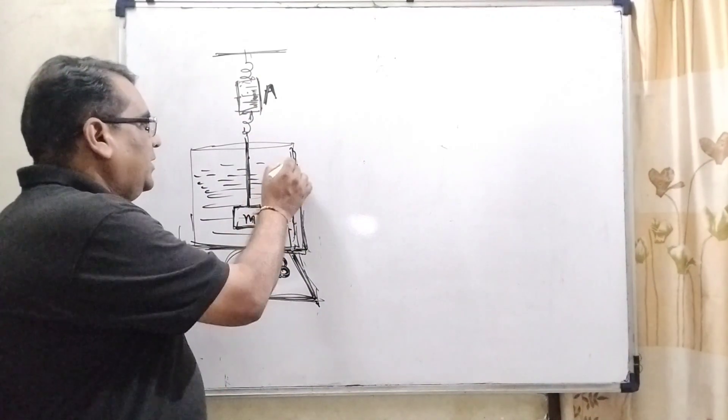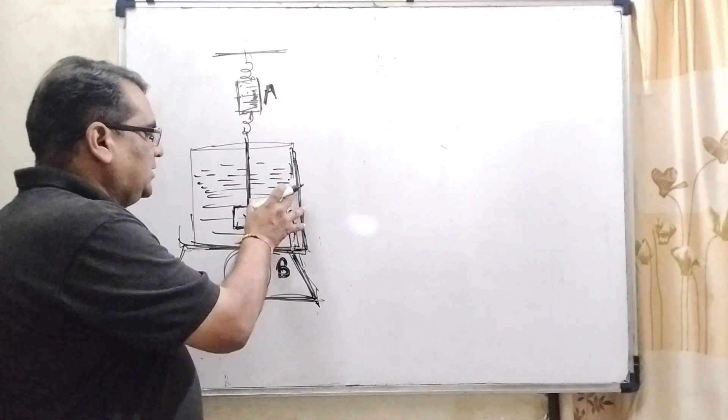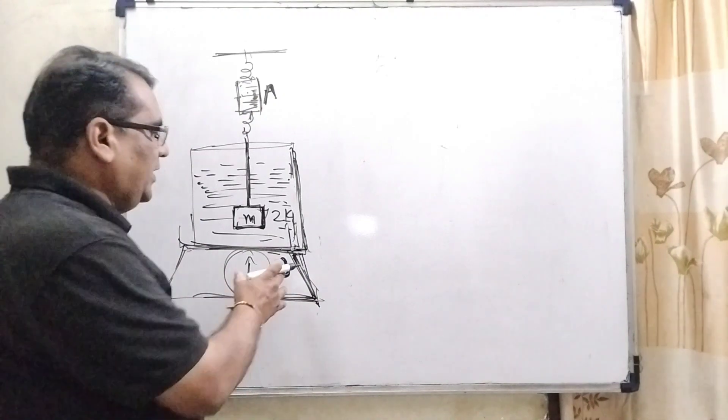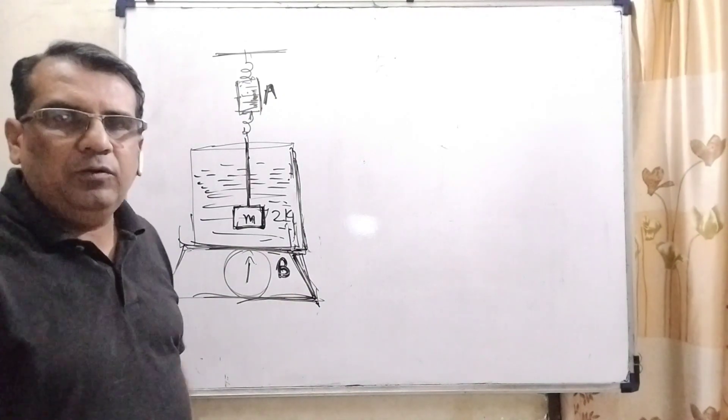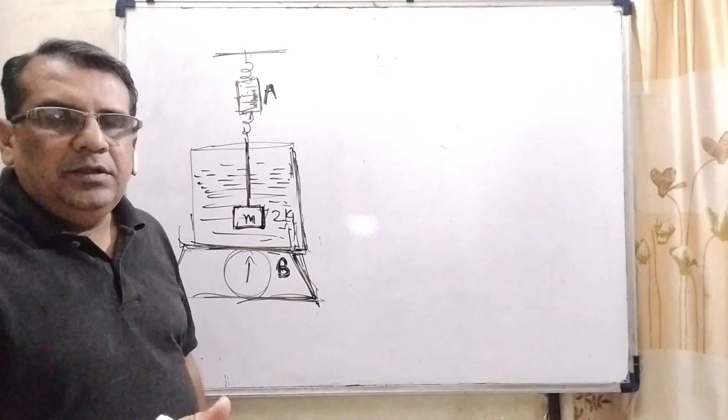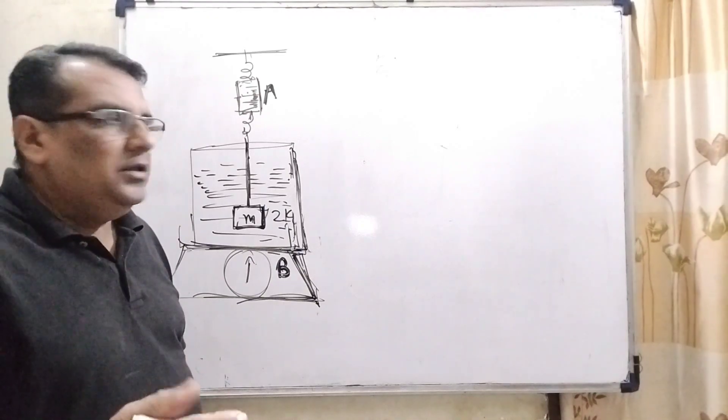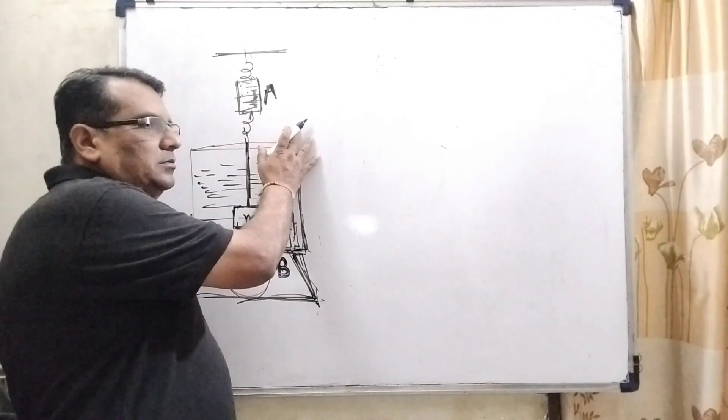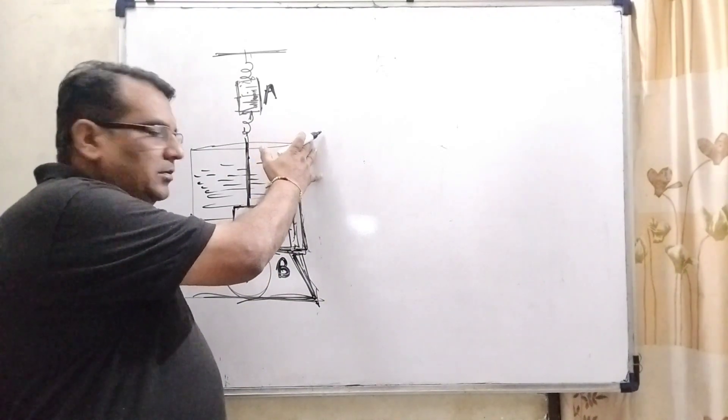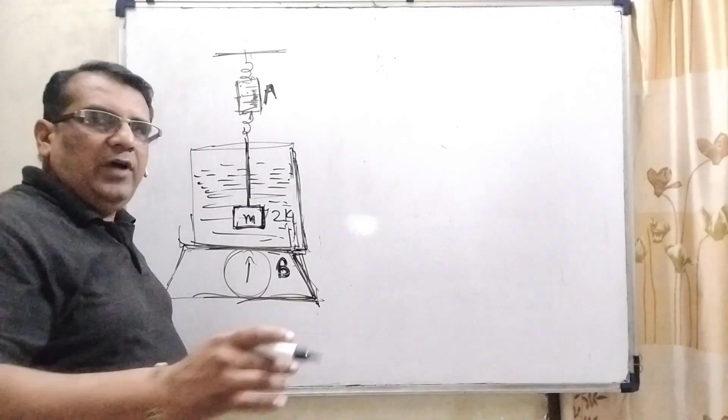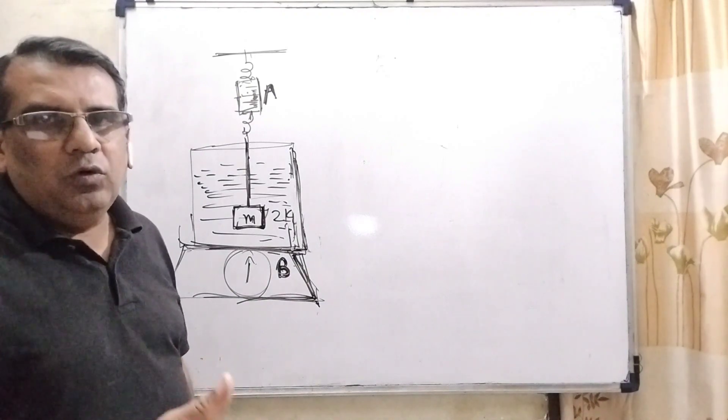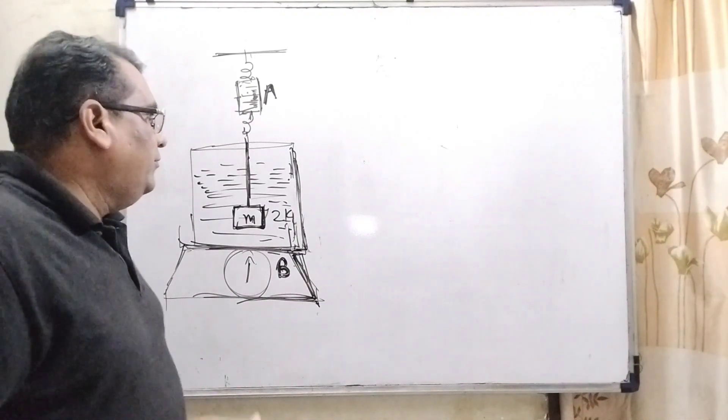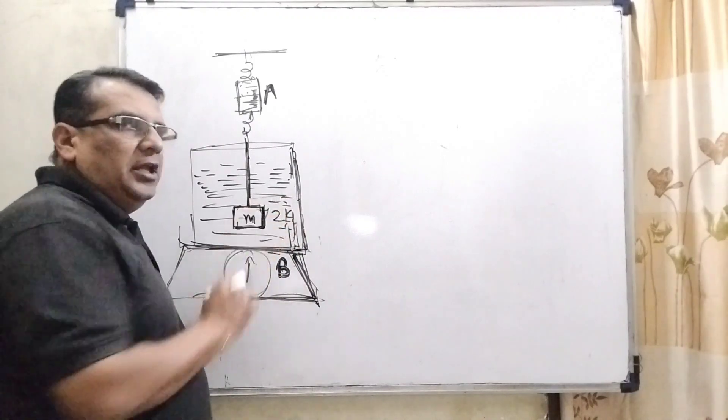And this system kept in the liquid and system put on this spring balance and this spring balance shows 5 kg. Then we have to find out this reading is more than 2 kg or less than 2 kg. This pan balance shows 5 kg or more than or less than 5 kg. Then we have to put this system in the liquid.